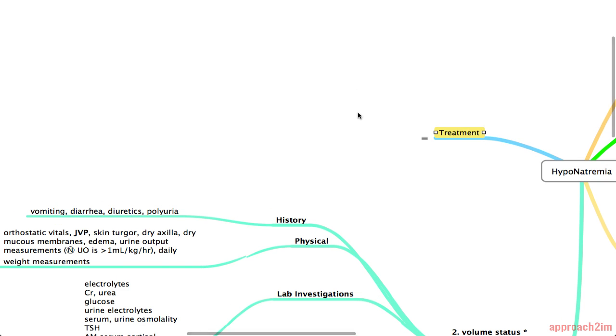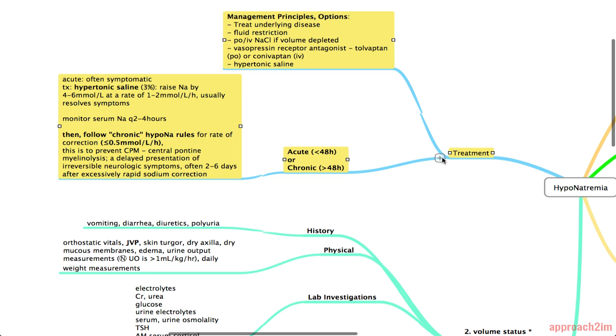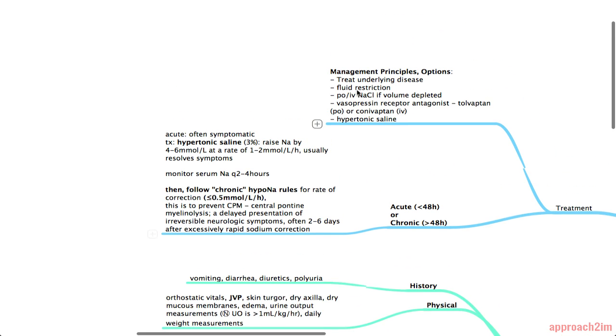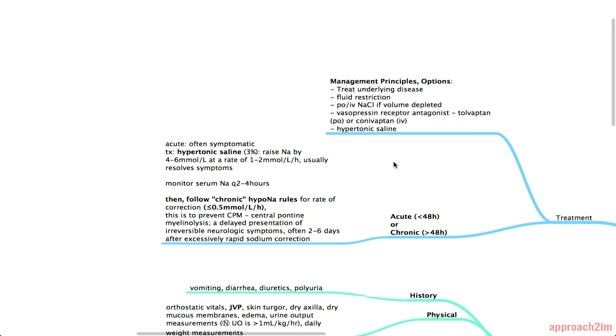So next we'll move on to treatment. So I've already mentioned the main principles of management. One of the things you don't see too commonly is vasopressin receptor antagonists and they basically block the effect of ADH. And the other option is hypertonic saline which I'll talk about in just a second here.